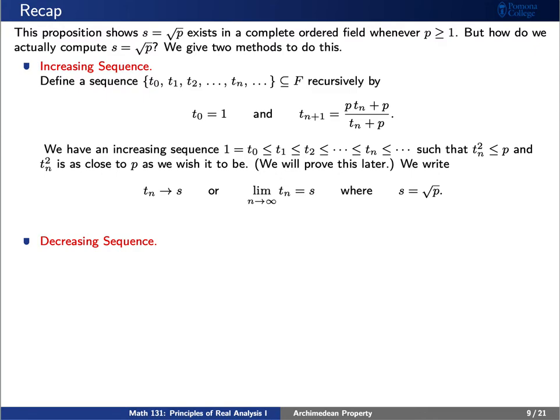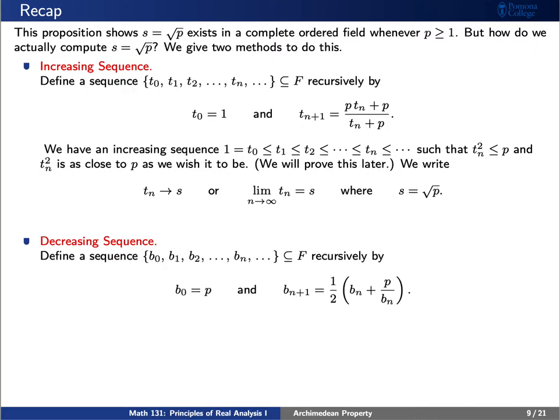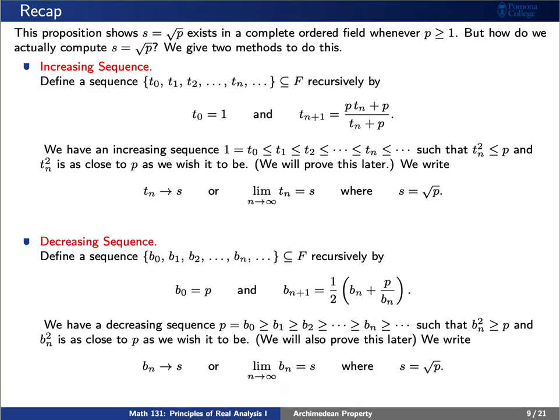Similarly, we can define a decreasing sequence of numbers — think of this as a sequence forming upper bounds for our set A. We recursively define b_0 equal to p, and then b_{n+1} as one-half times b_n plus p divided by b_n. Here we have a decreasing sequence starting at p, where each element satisfies b squared greater than or equal to p, and b_n squared gets as close to p as we wish. We write b_n approaches s, or the limit as n increases without bound of b_n equals s, where again s is the square root of p.